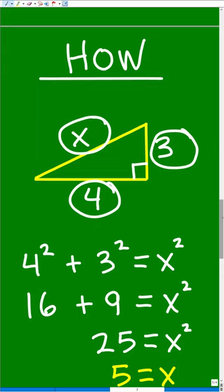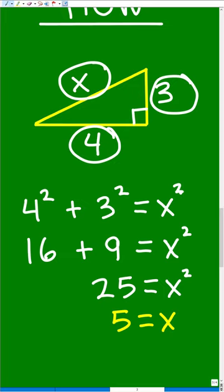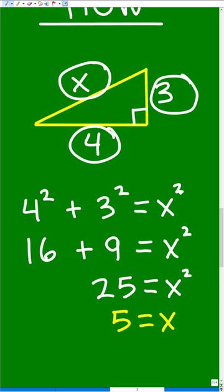And here you can see this nice work laid out for us. We got 4 squared plus 3 squared is equal to X squared. 16 plus 9 is 25 is equal to X squared. We take the square root of both sides and we have X is equal to 5. We have solved this right triangle.